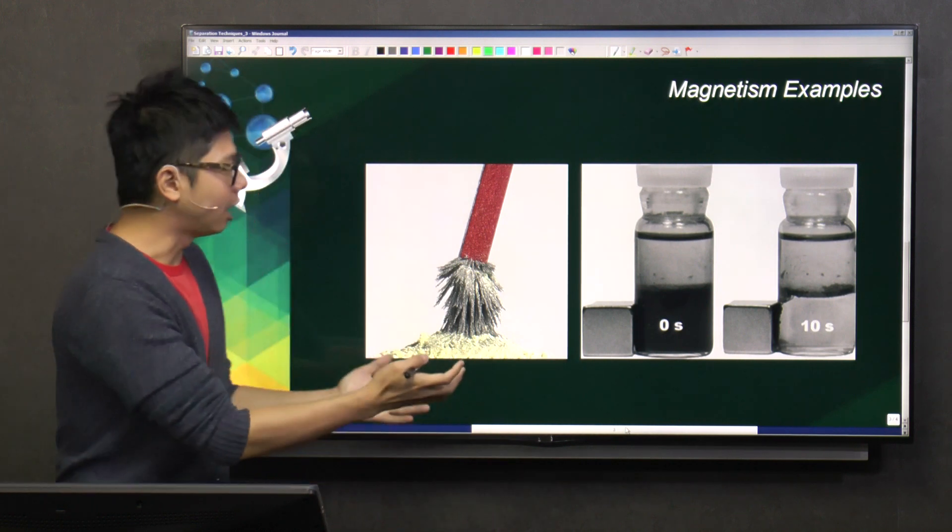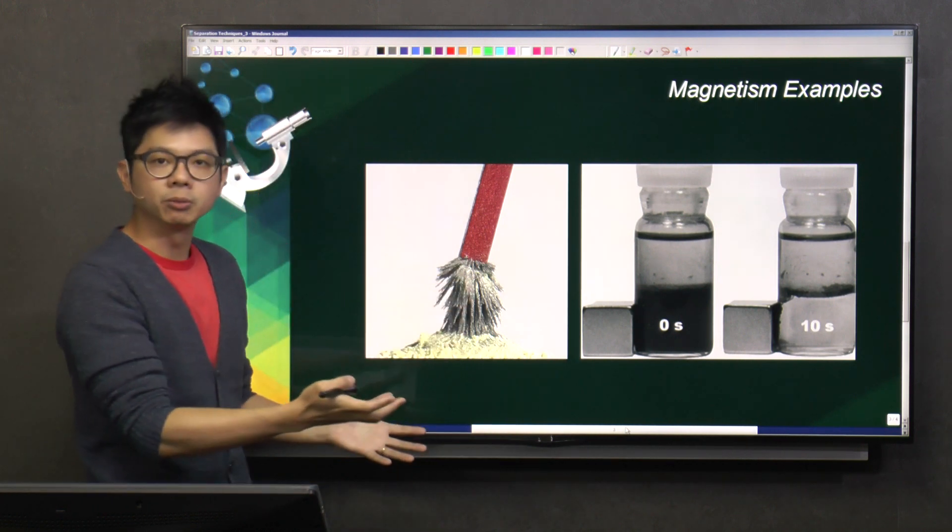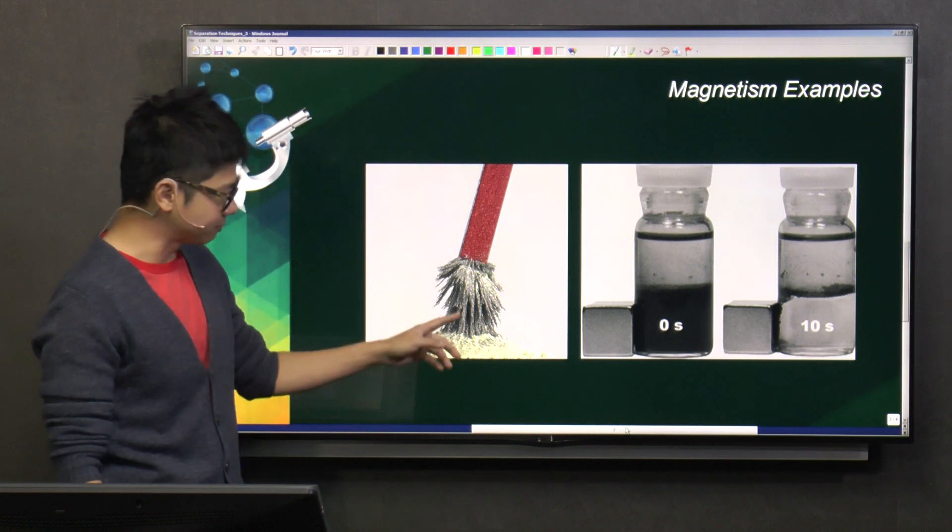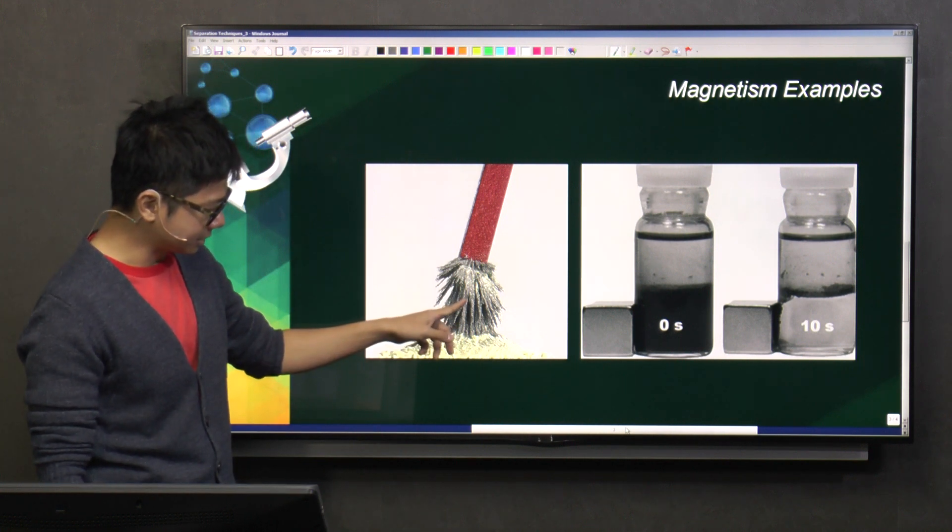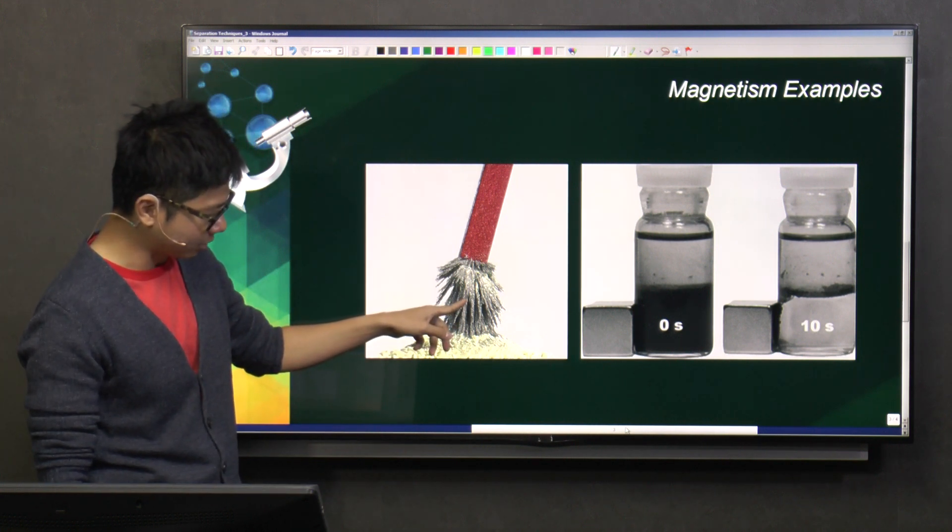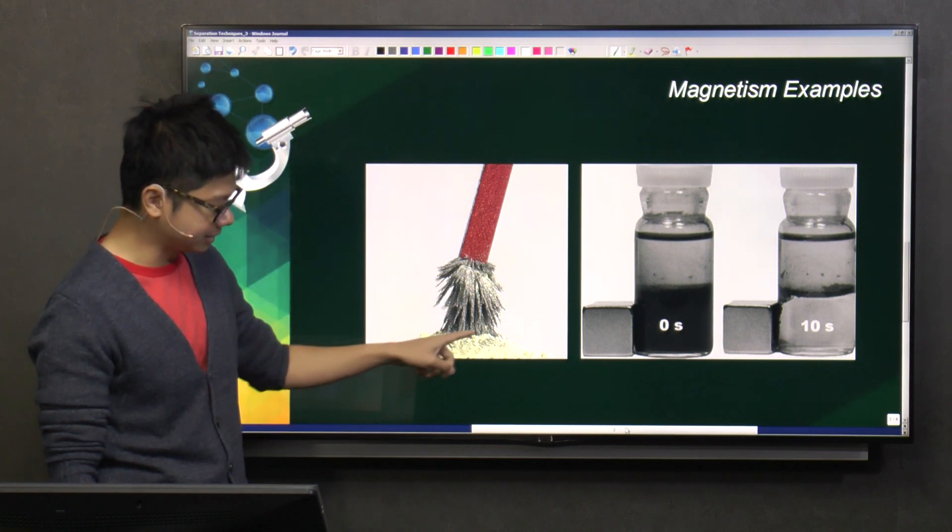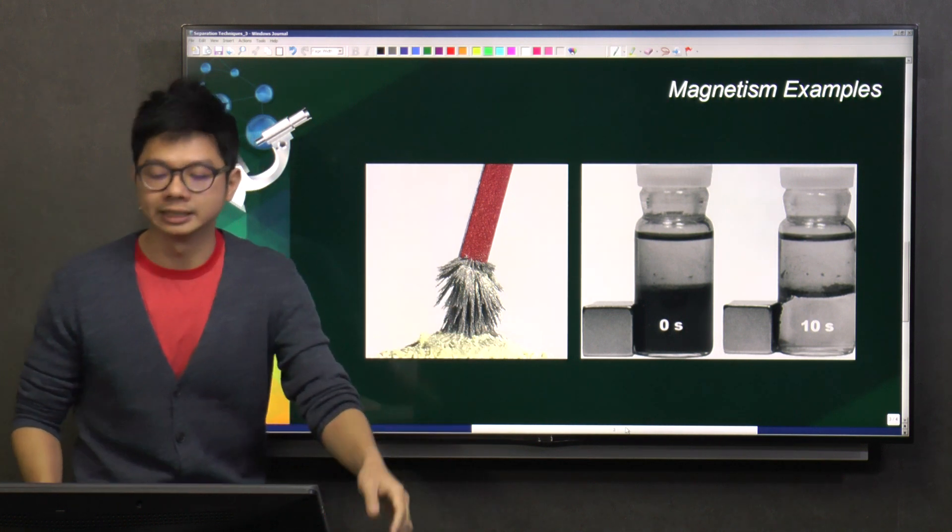So let's look at how magnetic separation works. For example, if I have this mixture, this mixture is iron, iron powder, or iron filings, and this yellow powder is actually sulfur.